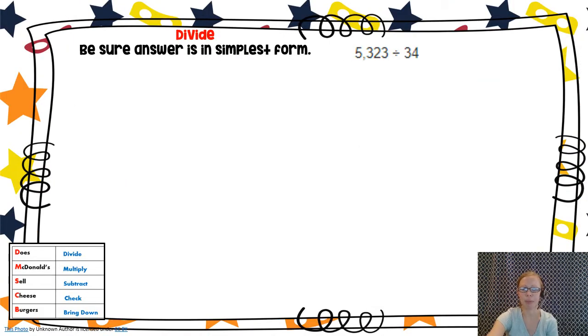So let's take a look at this problem. We're going to be dividing 5,323 by 34. So 5,323 is my dividend. I'm going to put that under the house. 34 is my divisor. So I'm going to put it outside the house. And I'm going to follow my steps for this division algorithm, which are down in the corner. Make sure to check those out if you need them.